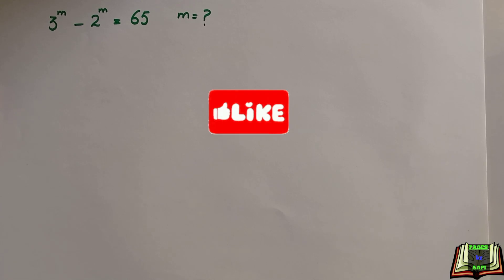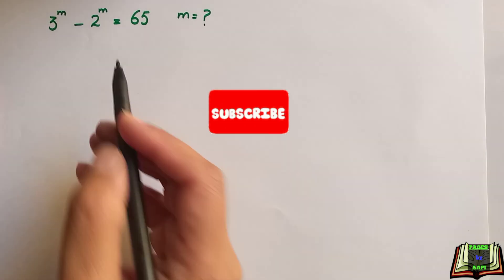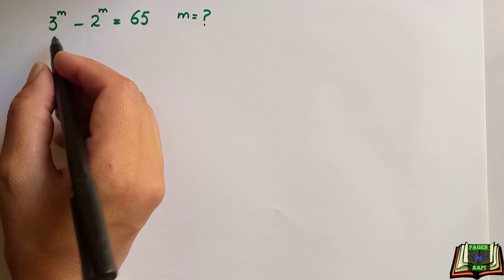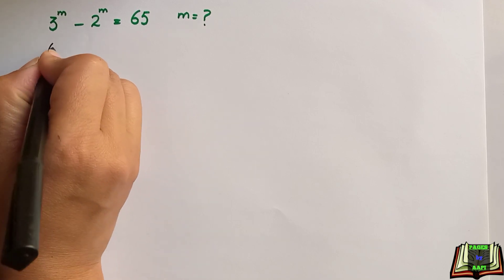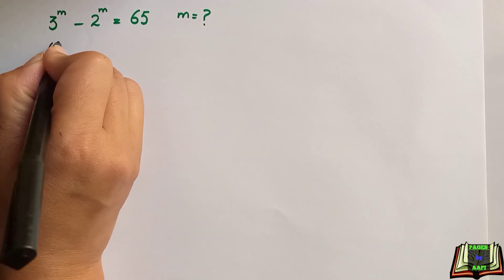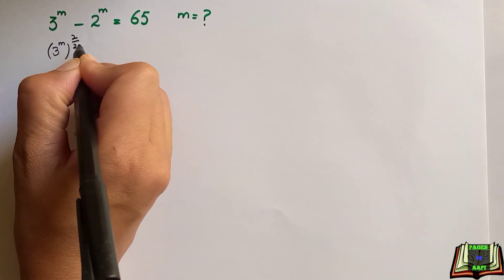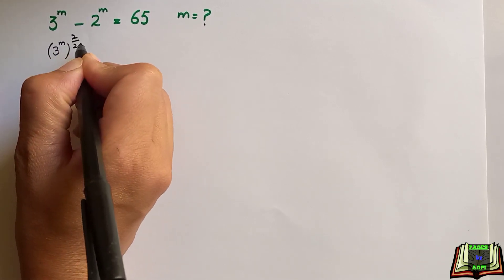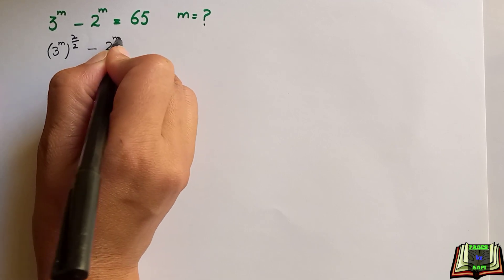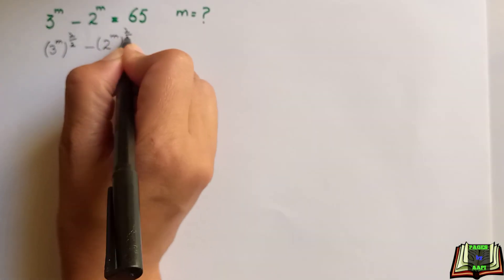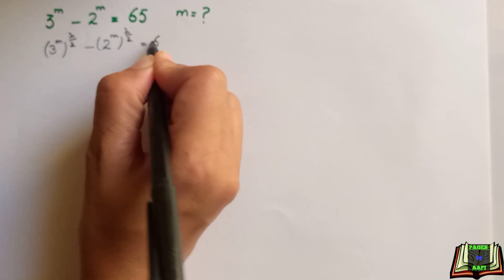You are requested to watch the complete video and like and subscribe. We can write 3 to the power m as 3 to the power m times 2 by 2, and similarly 2 to the power m as 2 to the power m times 2 by 2, and this is equal to 65.